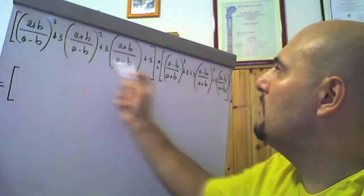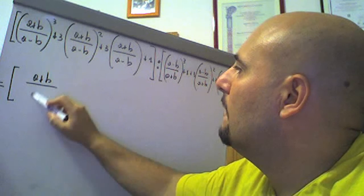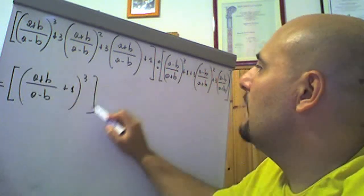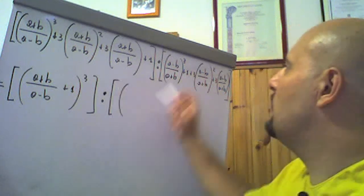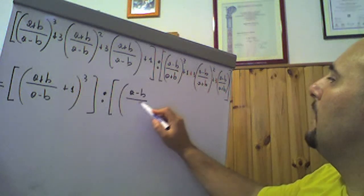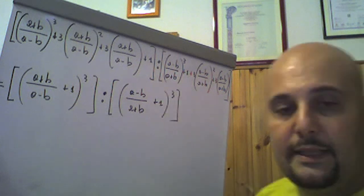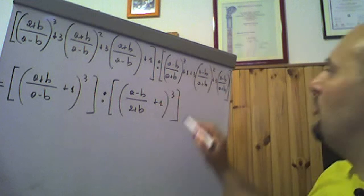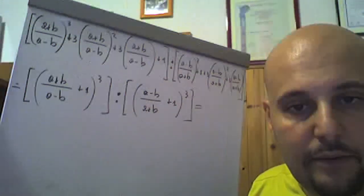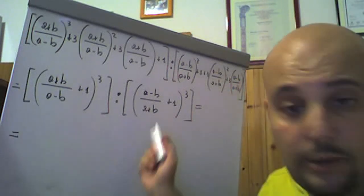Questi due sono sviluppi del cubo di un binomio algebrico, che poi verranno divisi tra loro. Questo è il cubo di questo e questo è il cubo di questo, quindi questo non è altro che: (a più b) fratto (a meno b), più 1, tutto al cubo, che va diviso per (a meno b) fratto (a più b), più 1, tutto al cubo. Semplicemente questo, non c'è bisogno di fare altro. Vedete come sia notevolmente semplificata la questione. Prima di calcolare le condizioni di esistenza, andiamo a fare il minimo comune multiplo dentro le due tonde.